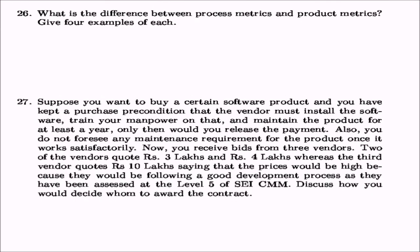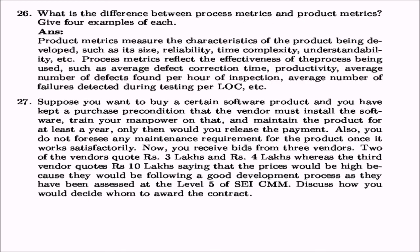What is the difference between process metrics and product metrics? Product metrics measure the characteristics of the product being developed, such as its size, reliability, time complexity, and understandability. Process metrics reflect the effectiveness of the process being used, such as average defect correction time, productivity, average number of defects found per hour of inspection, and average number of failures detected during testing per LOC.